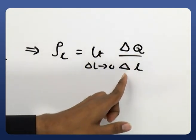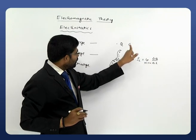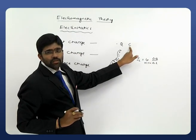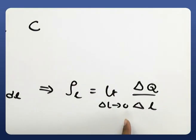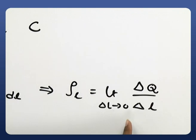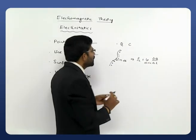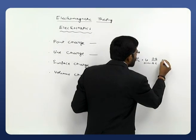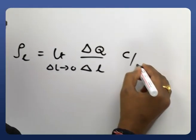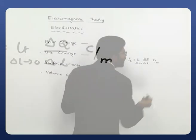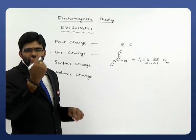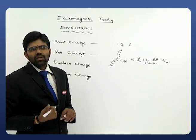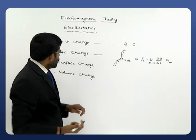Observe the units. In our previous case for point charge, the units are just Coulombs. Here, for line charge density, since it is charge per given length, the units are Coulombs per meter.